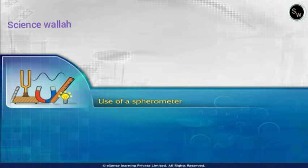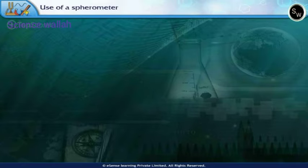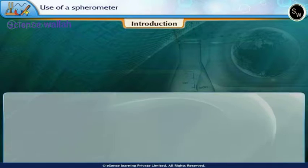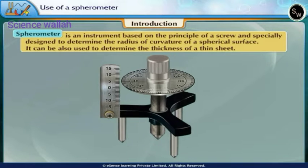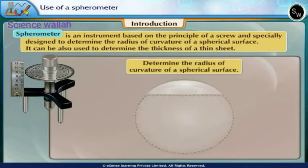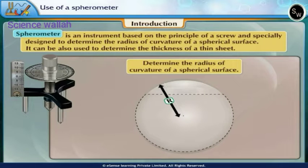Use of a Spherometer. Introduction: A spherometer is an instrument based on the principle of a screw and specially designed to determine the radius of curvature of a spherical surface.